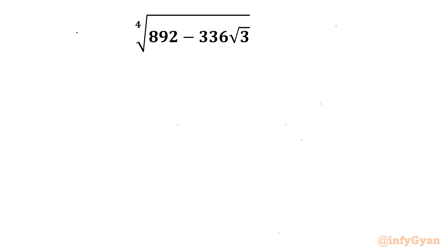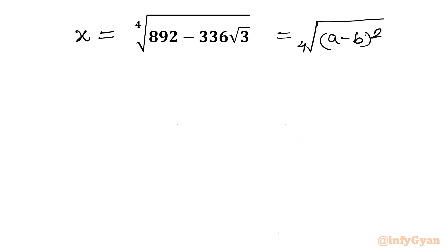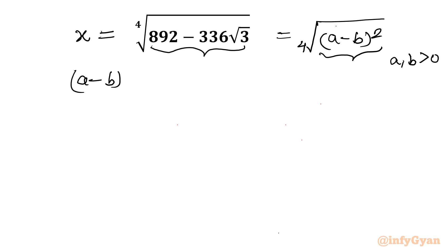Let us consider the given expression as x. I will equate this expression with 4th root of a minus b whole square, where a and b both are positive numbers. So we can compare both the radicands: a minus b whole square should be equal to 892 minus 336 root 3.